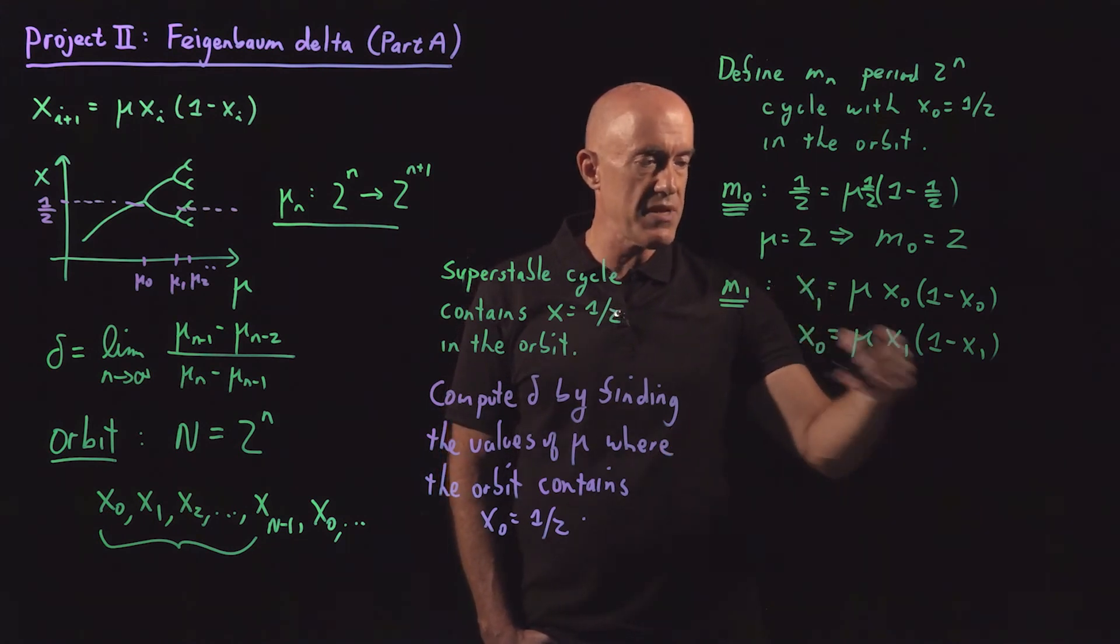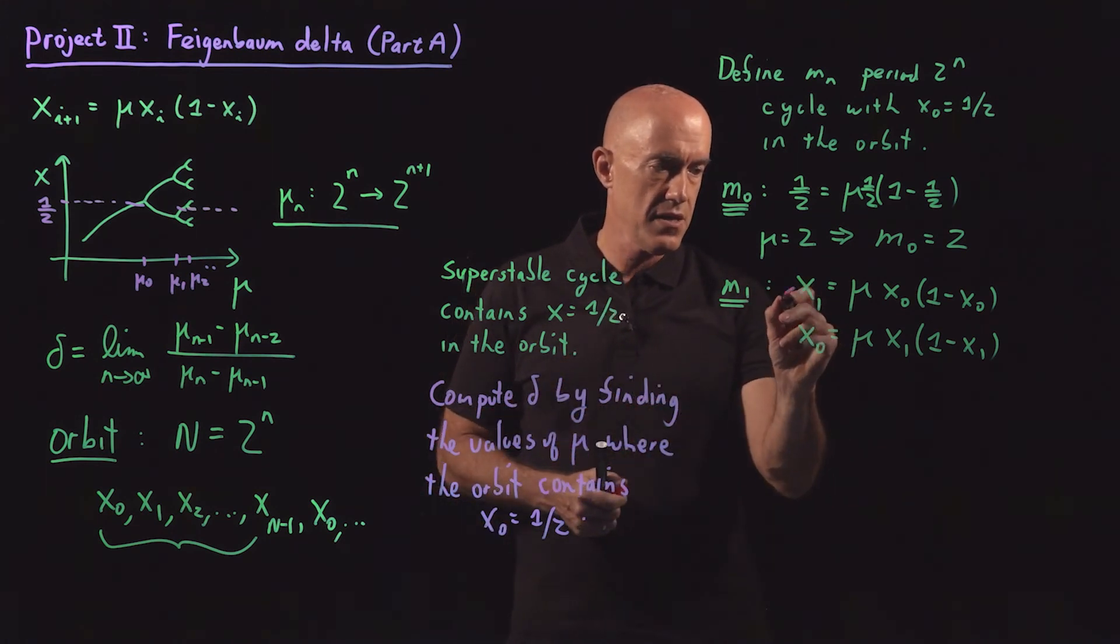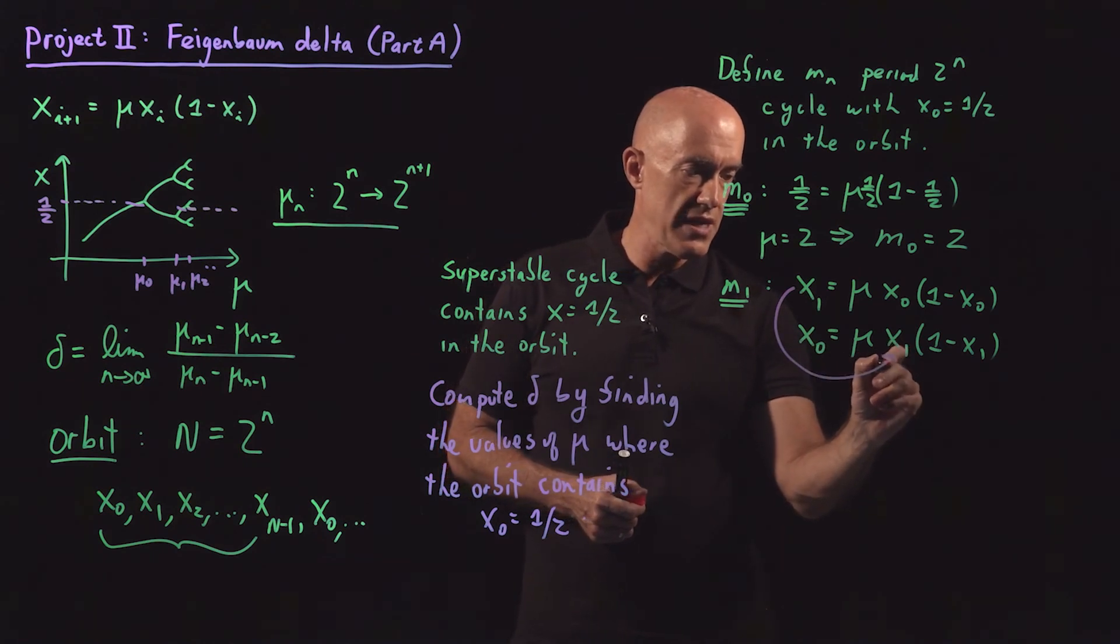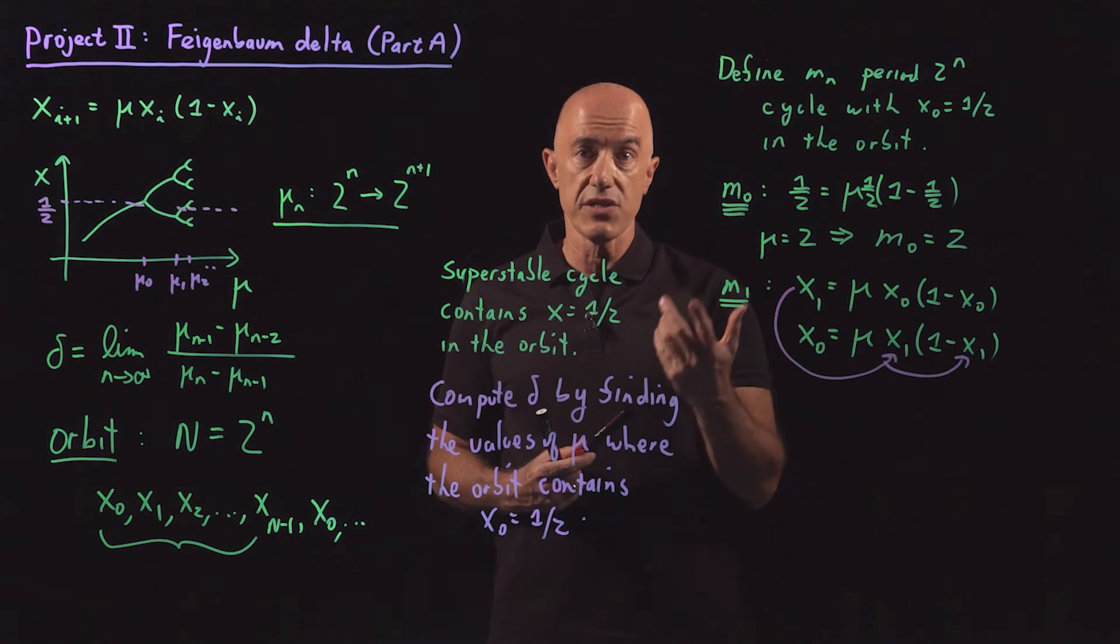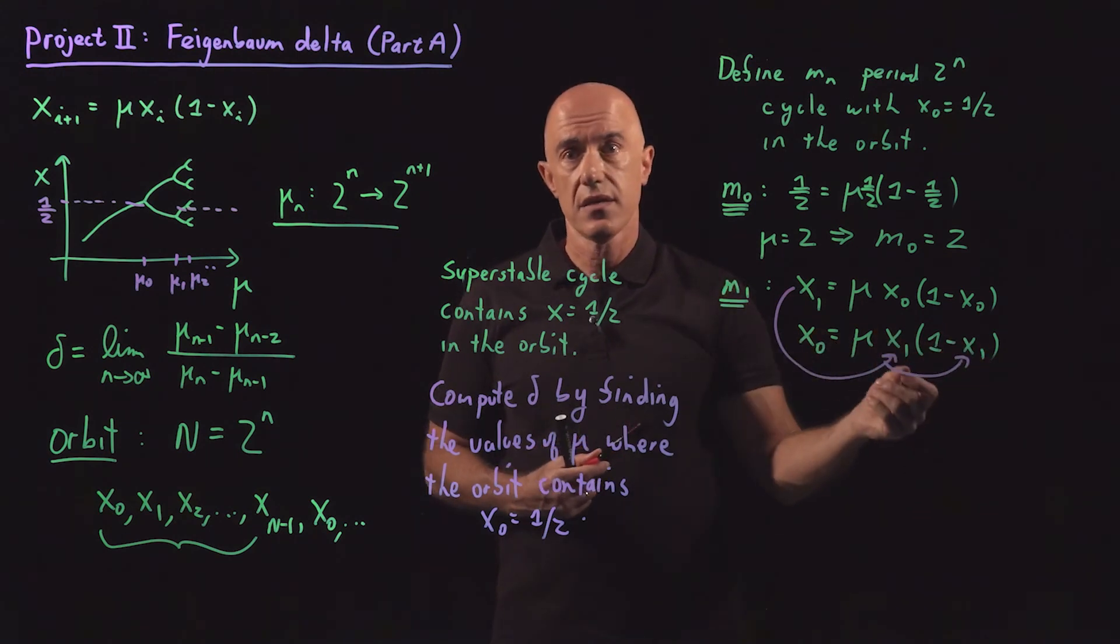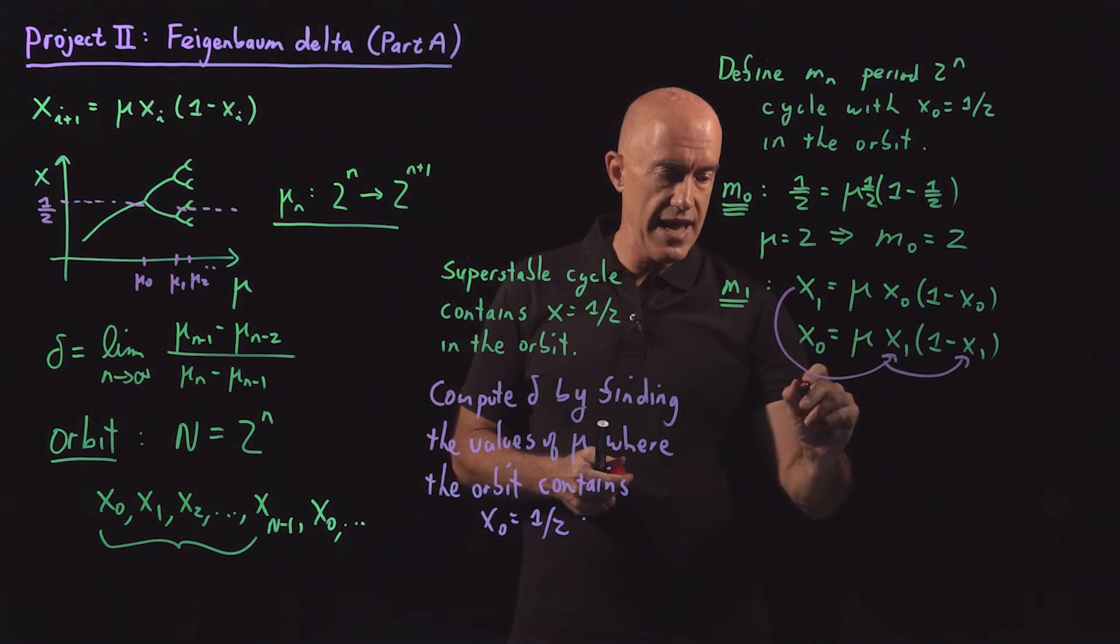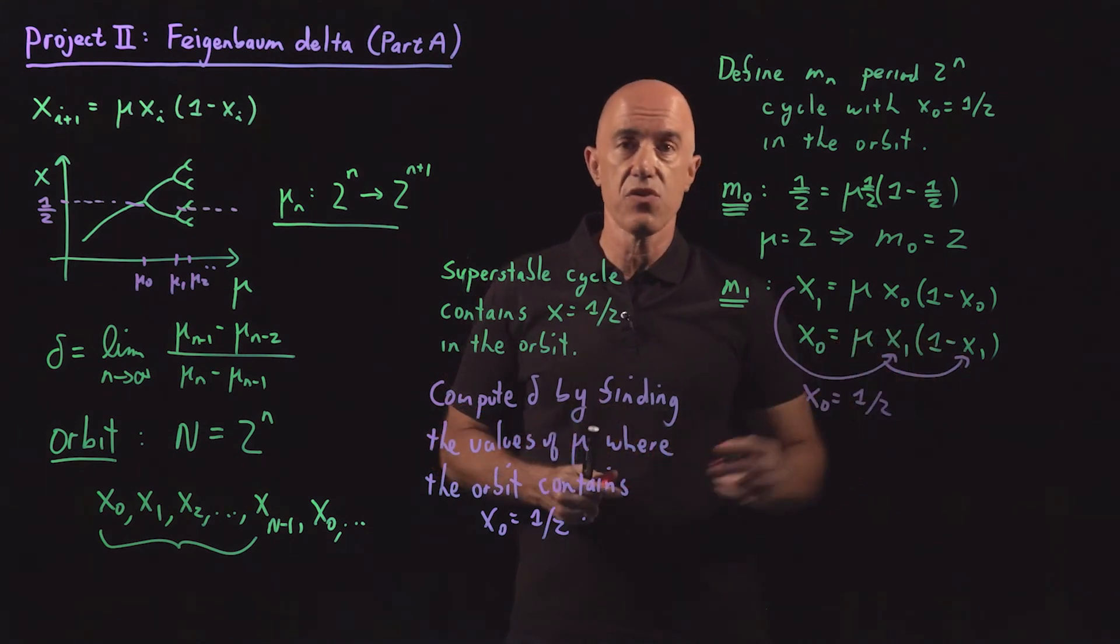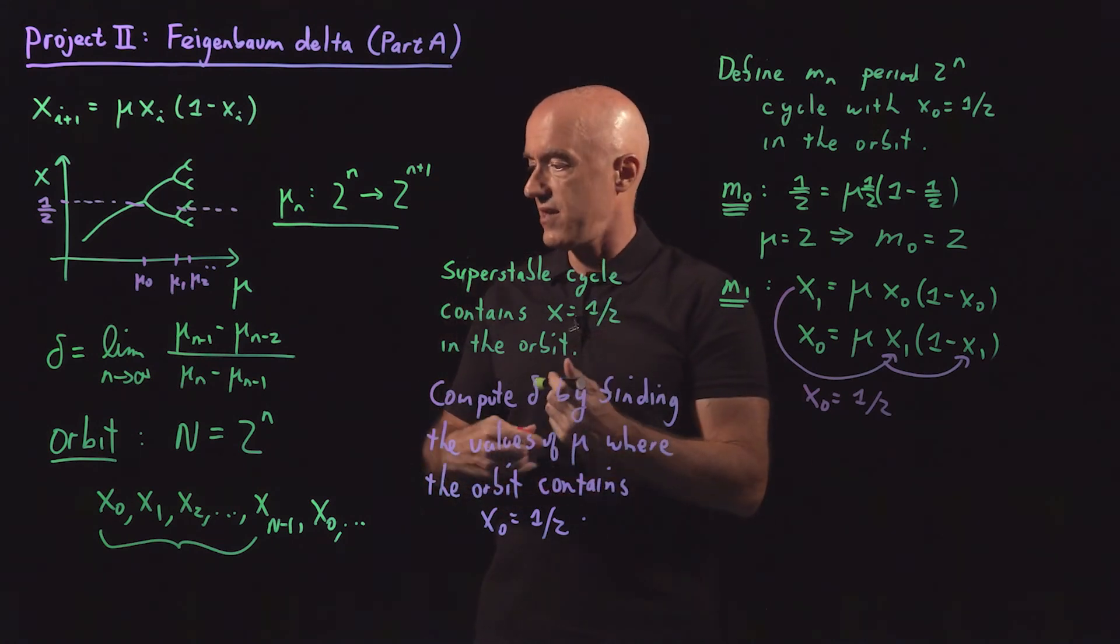But we can eliminate x1 from the second equation. So we can use the first equation here and substitute it into the second equation and obtain an equation for x naught. And then we plug in x naught equal to one half. And then we get an equation for mu. I asked you to do that as a reading problem.